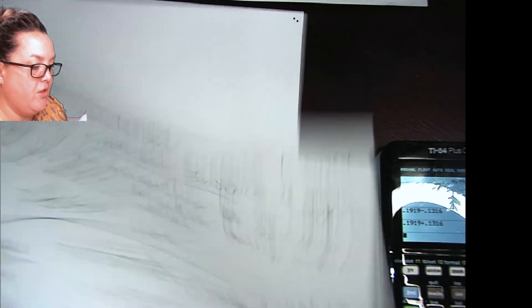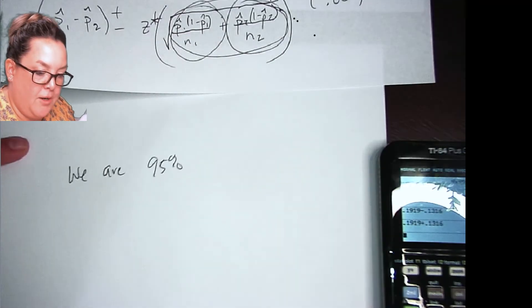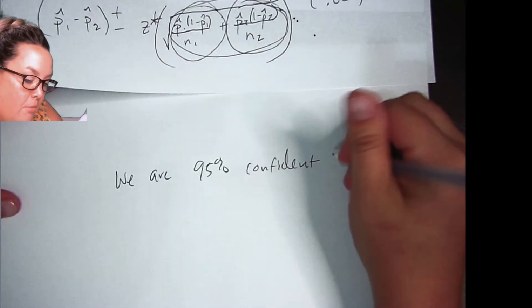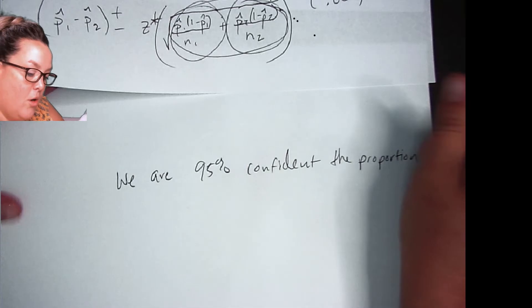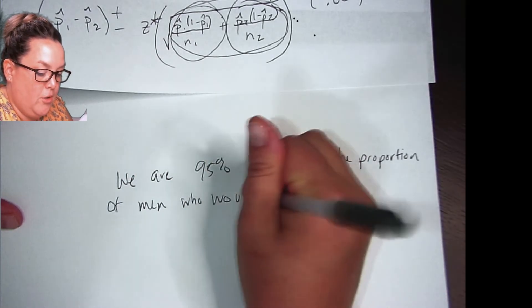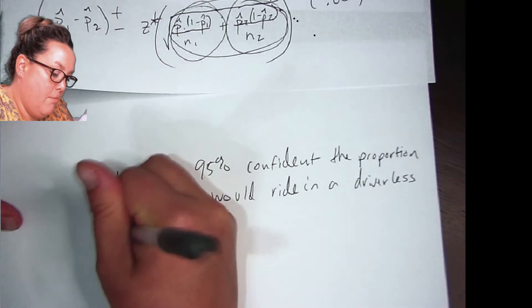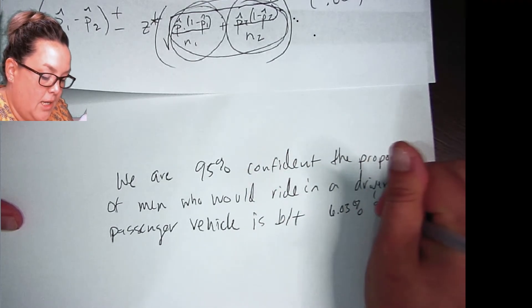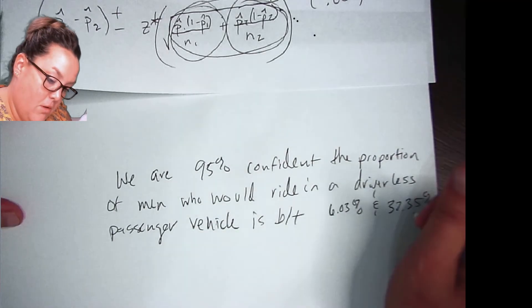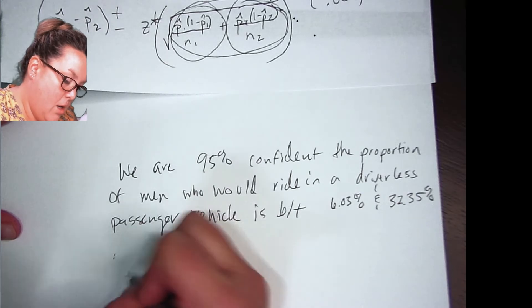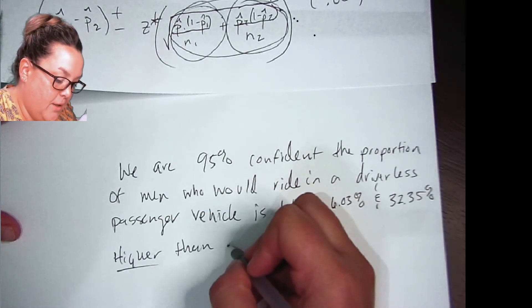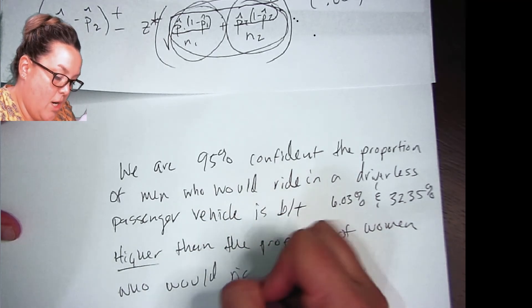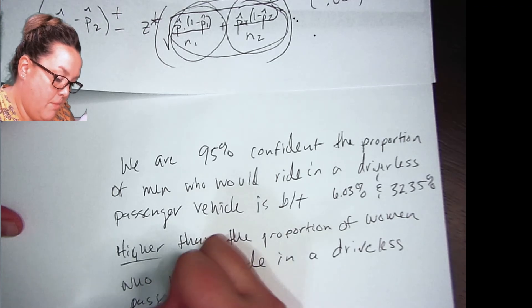So that's the interval that we have now to interpret that post hoc. So we would say we are 95% and that's because we had the 95% confidence level multiplier. So we're 95% confident. And then remember, you're going to state your first parameter and that was the men. So we're 95% confident the proportion of who would ride in a driverless passenger vehicle is between 6% and 32.35% higher than, and I'm saying higher because it's positive, than the proportion of women who would ride in a driverless passenger vehicle.